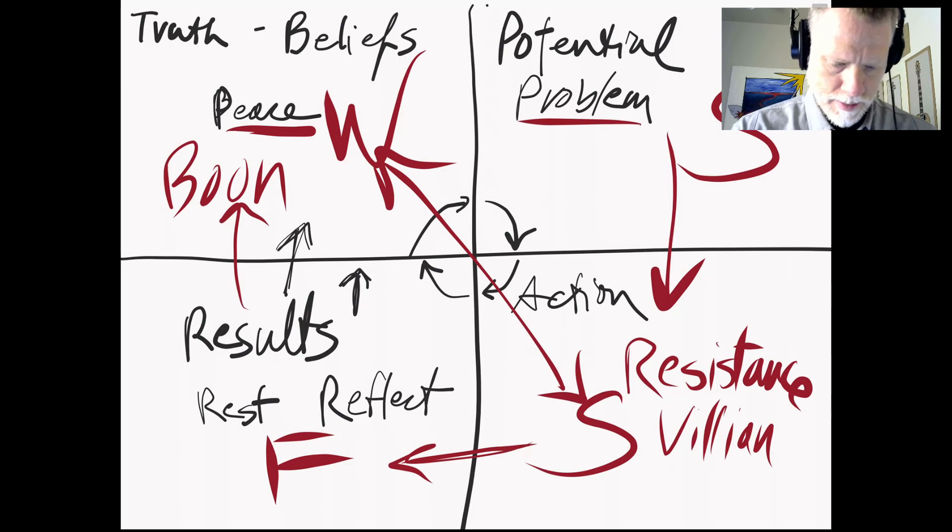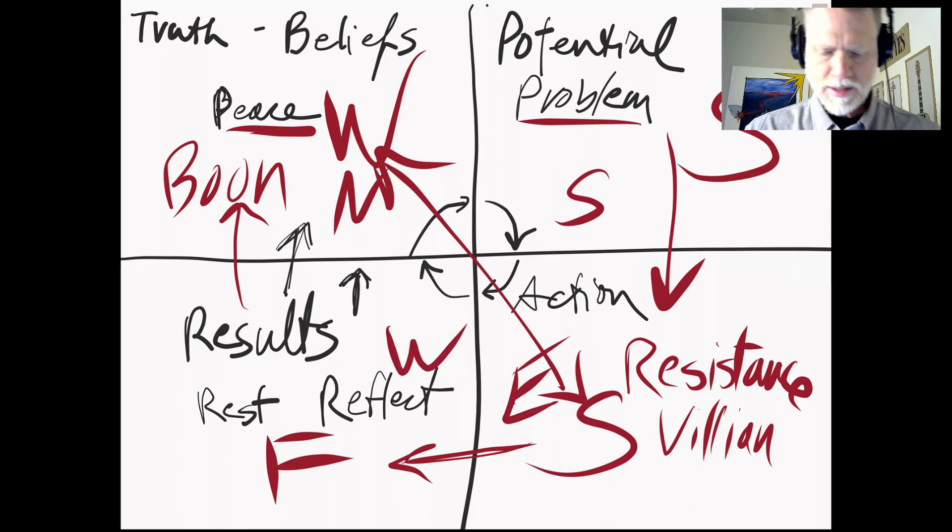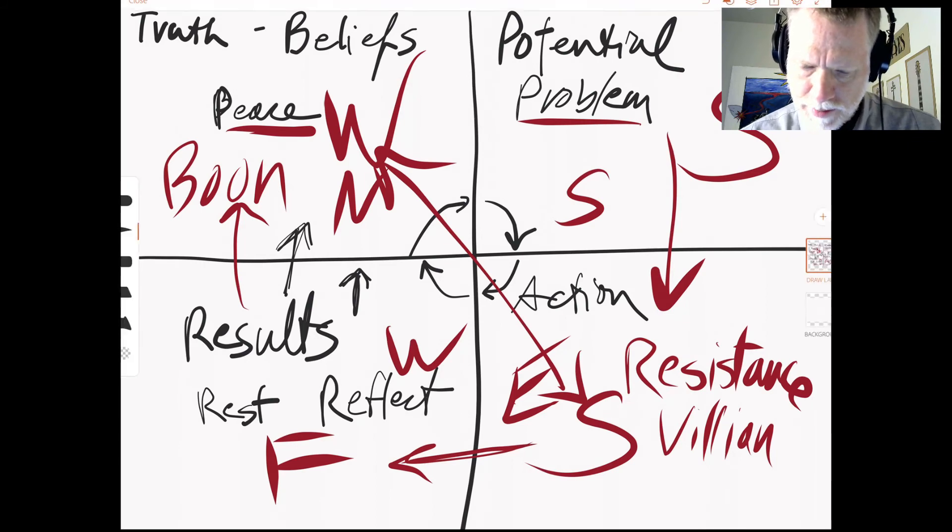And then of course that starts all over again. We've got north and south and east and west. But we've got the four directions of the universe. The native American indigenous cultures can teach us something about all that.